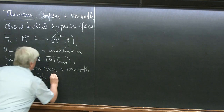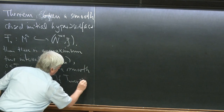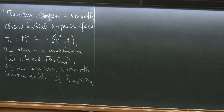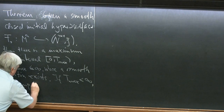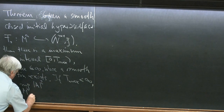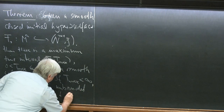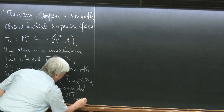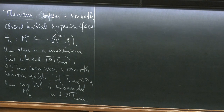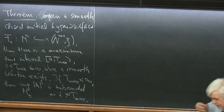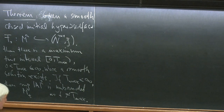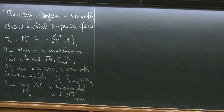If T_max happens to be finite, then we can detect this by seeing that the curvature blows up: the sup of the second fundamental form |A| on M^n_t is unbounded as t tends to T_max. This is the smoothing property that Toti Daskalopoulos already mentioned — a parabolic property. It cannot happen that the first 27 derivatives of the curvature remain bounded and the 28th derivative blows up. If the curvature is bounded, then all higher derivatives are bounded and the surface remains smooth, and then we can extend the flow further.